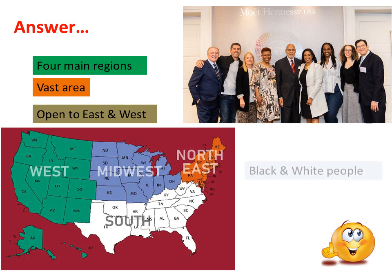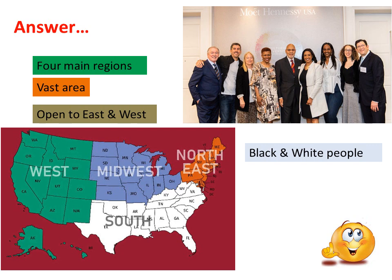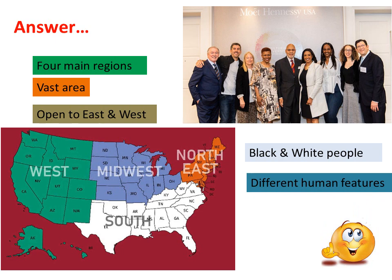The second picture shows both black and white people with different human features — for example, color (white and black), height (tall and short), and hair (straight and curly, black and white). But there is unity. They all work together and they are happy. This is what I observed.